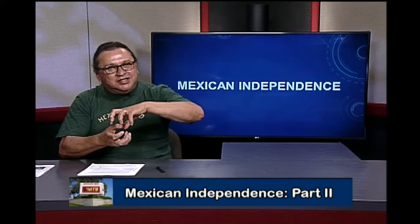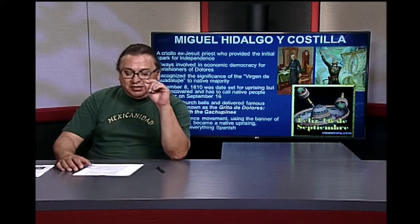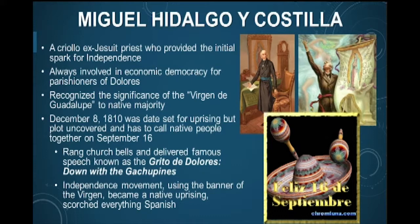Where do we begin this journey in terms of the independence? We begin it with one particular man — his name is Miguel Hidalgo y Costilla. He is a Criollo who will provide the initial spark for independence. The spark for independence comes from Europe because in 1808 Napoleon is going to invade Spain and install his brother Joseph as king, setting off a chain of events that would lead to the breakup of the entire Spanish colonial Empire.